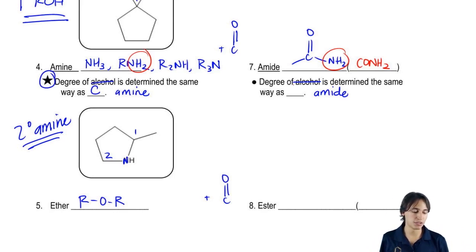The degree of the amide is determined the same way as a carbon. So if I gave you the following amide, this is actually going to be – yeah, I'll give you that amide.